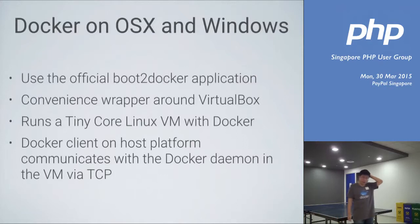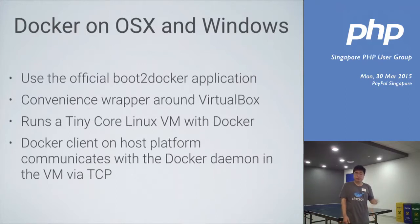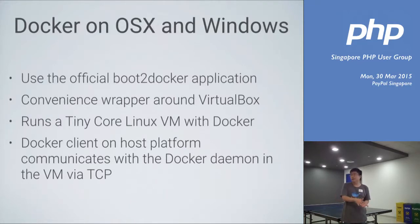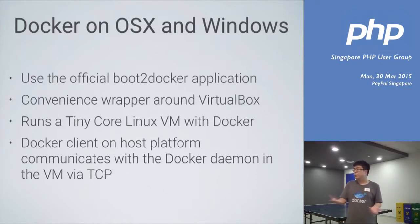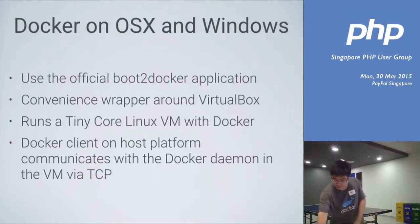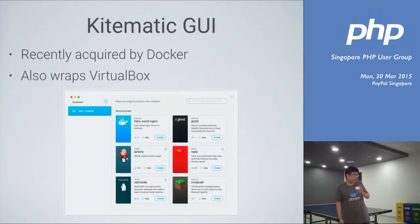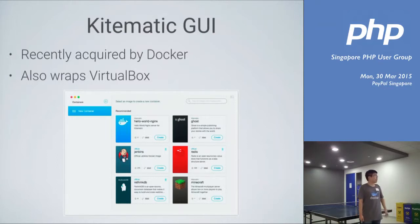Docker on OS X and Windows provides a Boot2Docker application you can use to run Docker — it's just a wrapper around VirtualBox. VirtualBox runs a virtual machine with Tiny Core Linux, and Docker is installed inside. You use the Docker client on your OS X terminal to communicate with the daemon inside the virtual machine. However, if you're running Ubuntu on a production server, the client communicates directly with the daemon on the same host. If you want something more user-friendly, there's also a Kitematic GUI, recently acquired by Docker, which also uses VirtualBox underneath but has a more user-friendly interface.